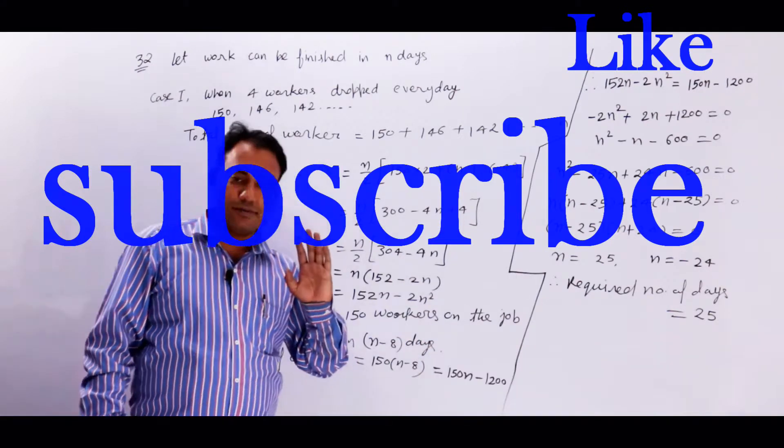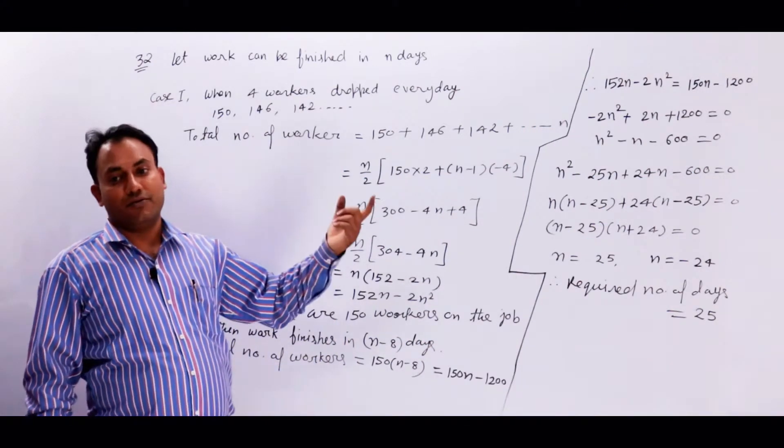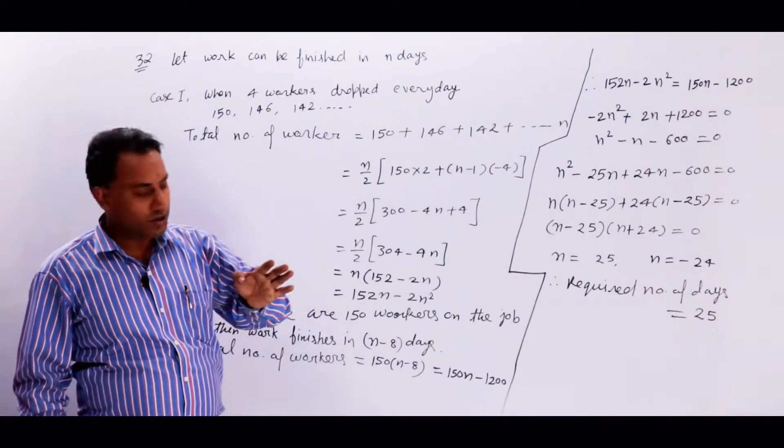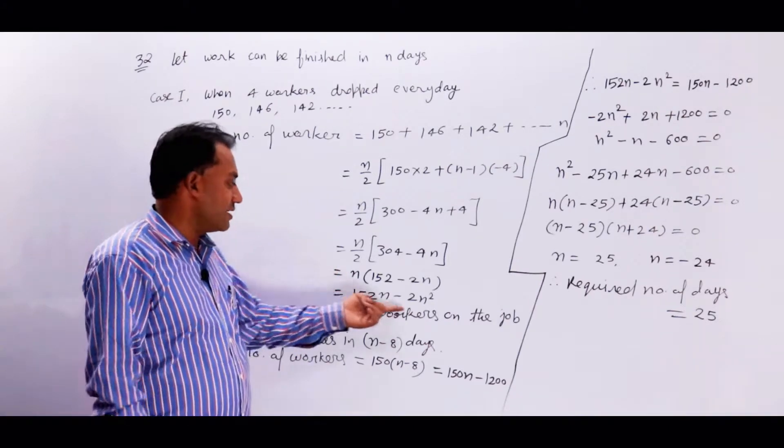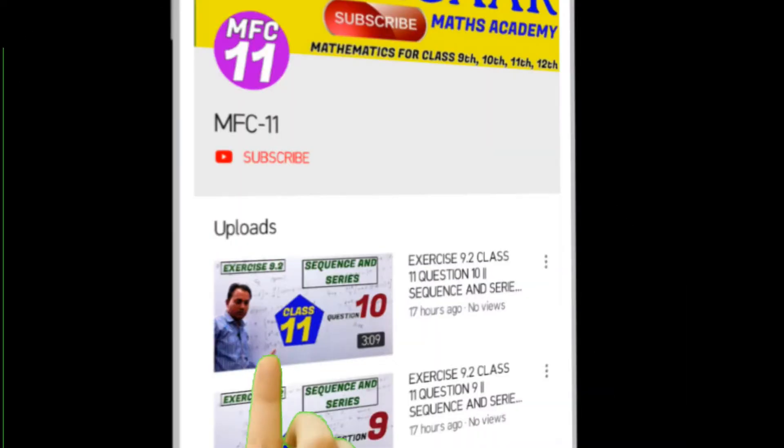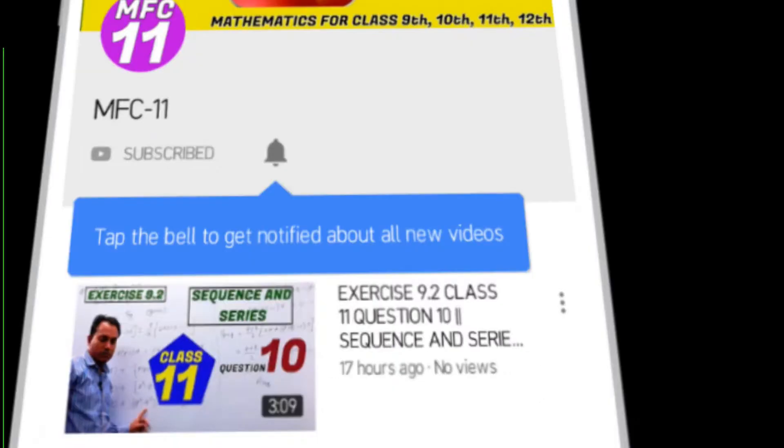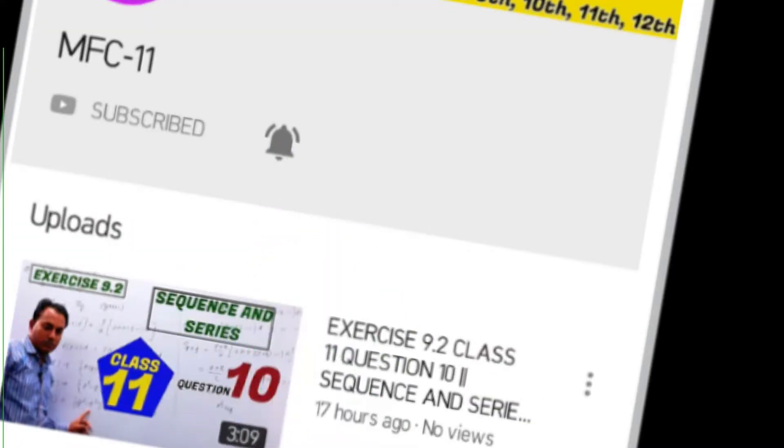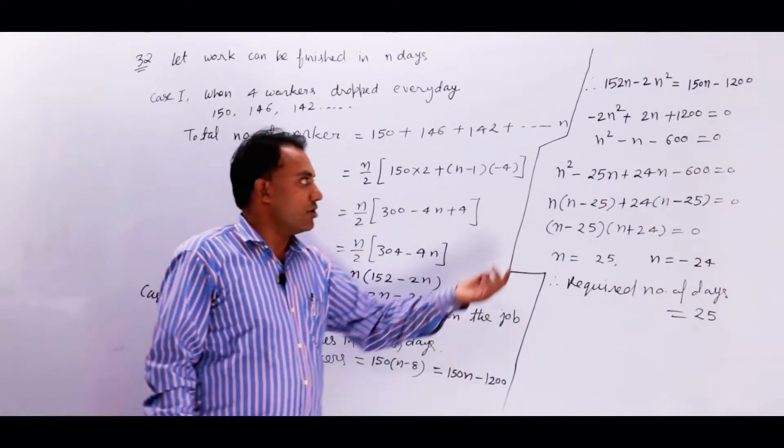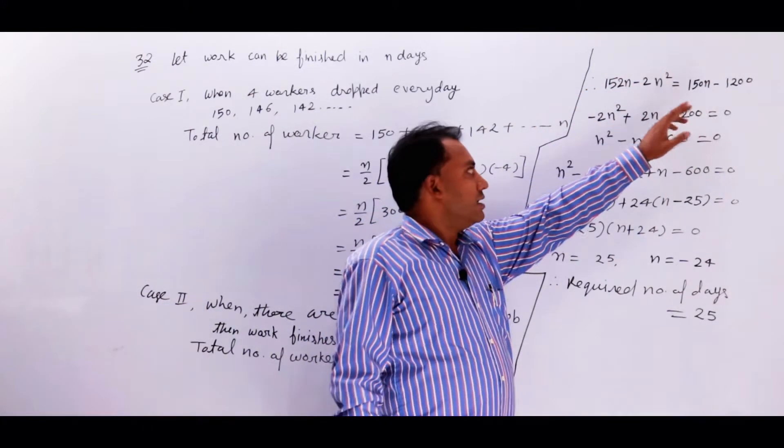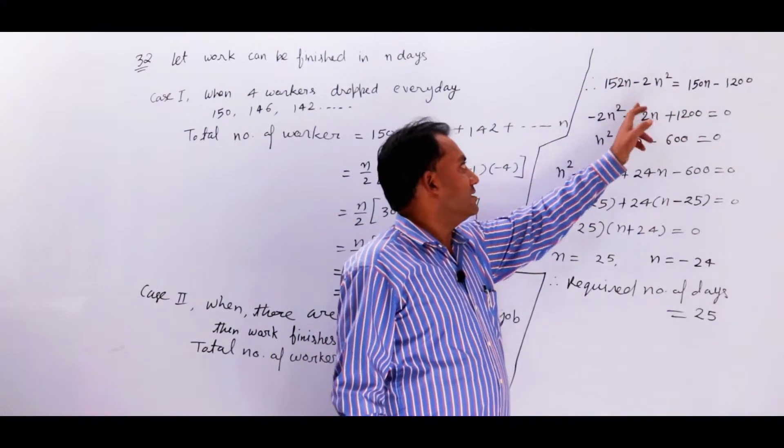150n minus 1200. Now in both cases work finish ho jaata hai, so dono ko equal kar lije. Pehle case me itne, doosre case me itne, dono ko equal kar lije.